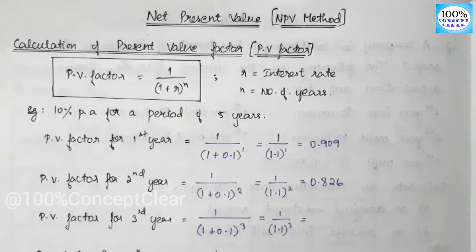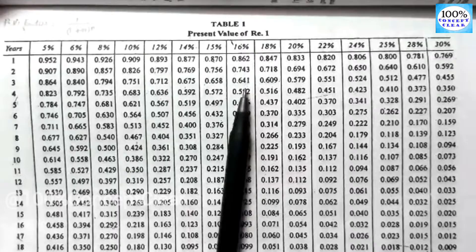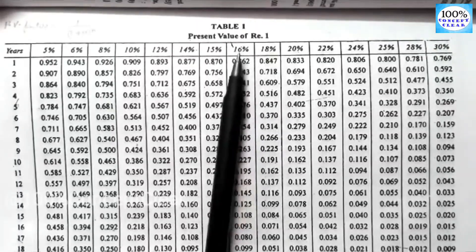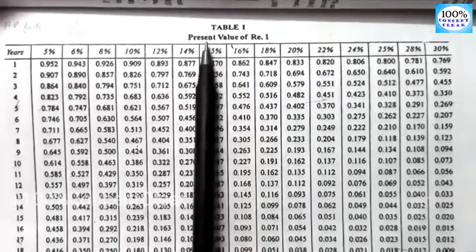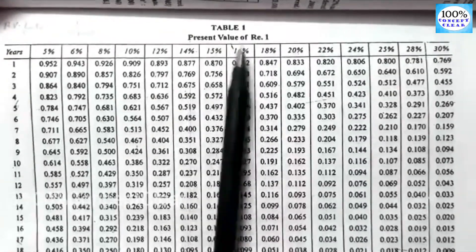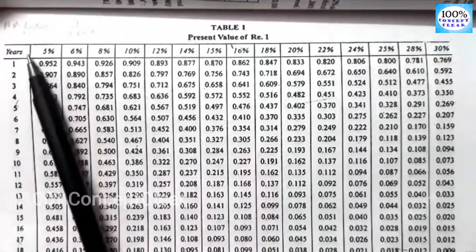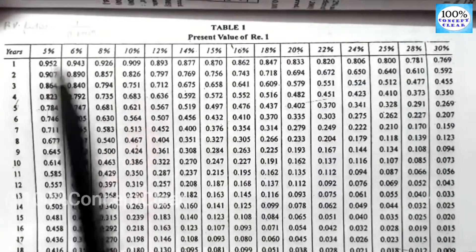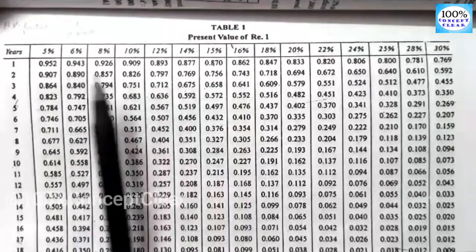In this video, we are looking at present value factors. Present value factors are used in the non-traditional, discounted cash flow method. In all DCF methods, PV factors are a major important topic. So that is why we will check the PV factors in this video. We have two tables: Table 1 and Table 2.